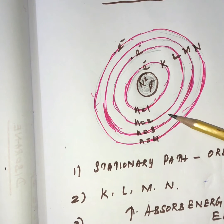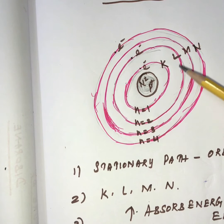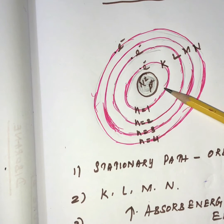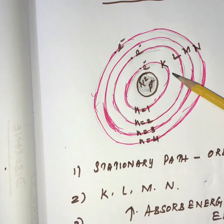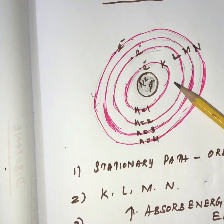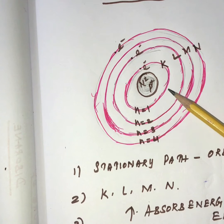As long as the electron is in a particular orbit, it is associated with that orbit or energy level. The orbits are called energy levels — first, second, third, and fourth energy levels — and the stationary paths or orbits are named K, L, M, and N.